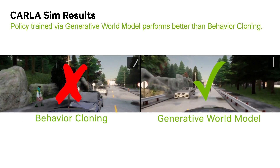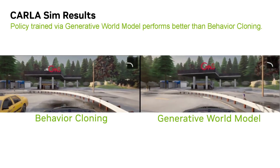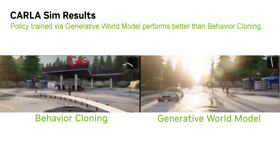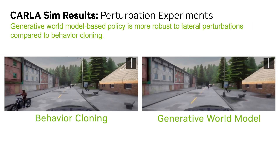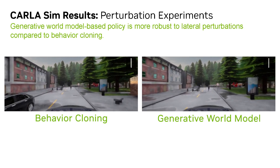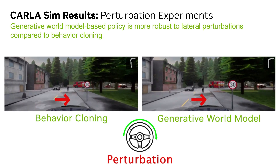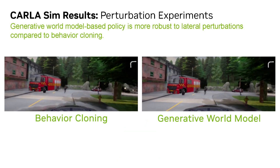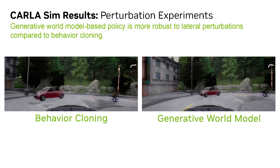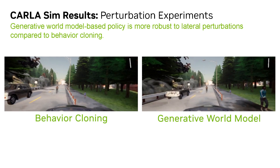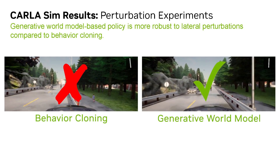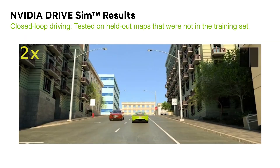In this example, we see the BC agent on the left crashing, while the generative world model agent on the right does not. We next purposefully push the models outside of their training distribution by applying lateral perturbations. The world model trained agent recovers from both perturbations well while the BC policy crashes.